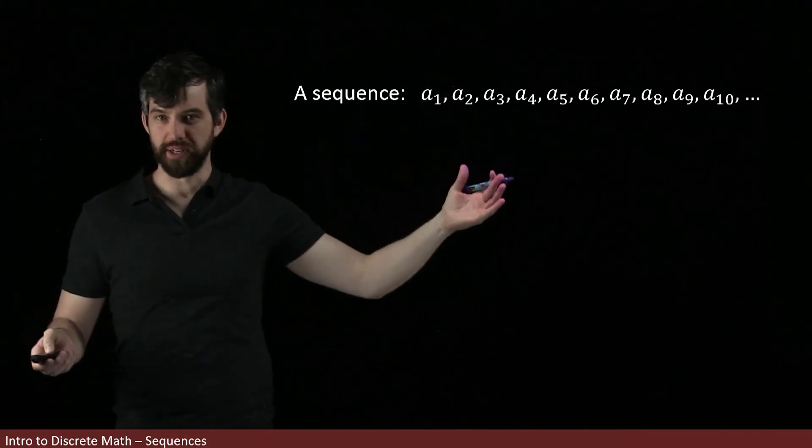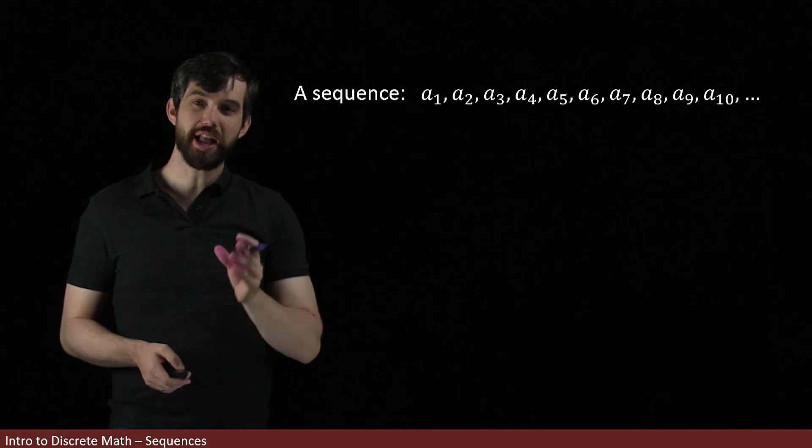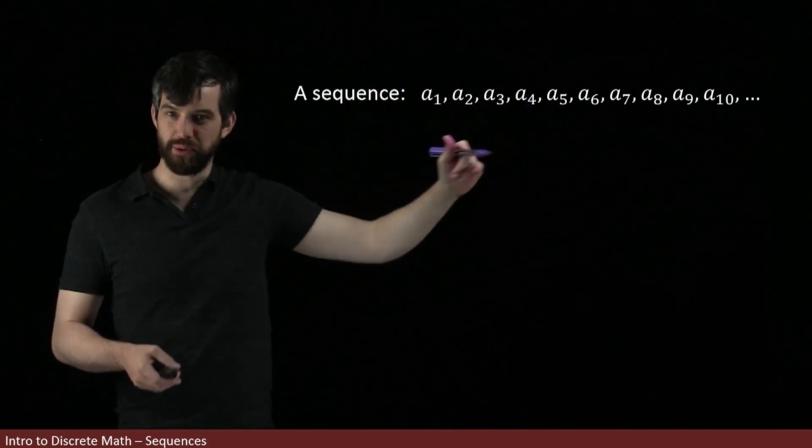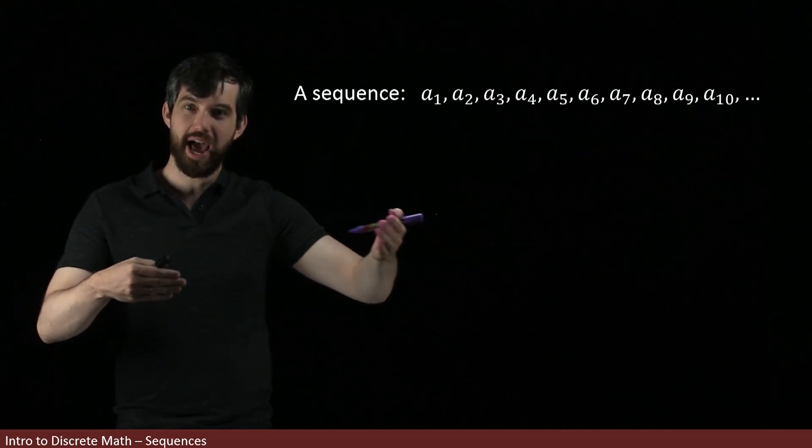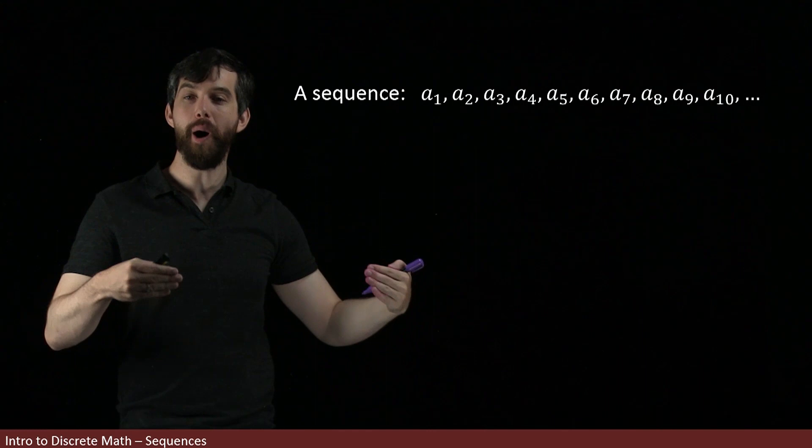I've written down here a sequence, has the first term, second term, and goes on forever. I could also be interested in what happens if I take this sequence, which is a list of numbers, and instead of just listing them, I tried adding them all up.